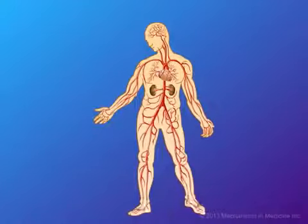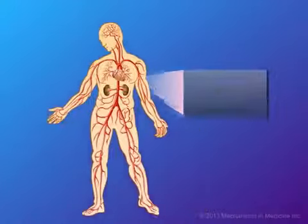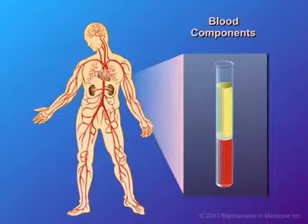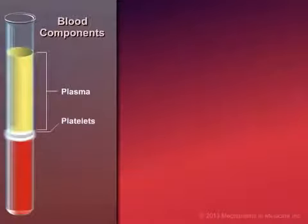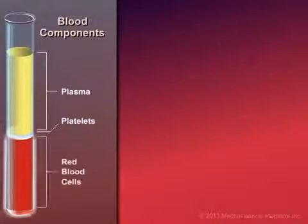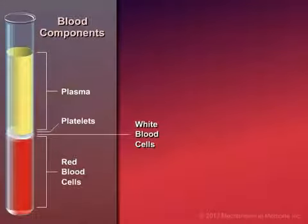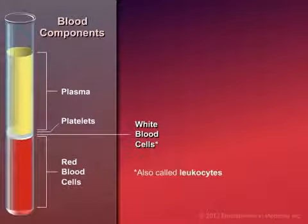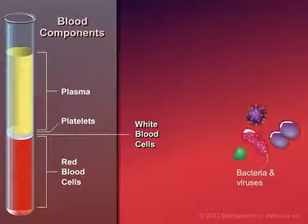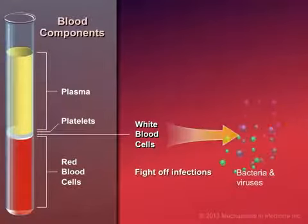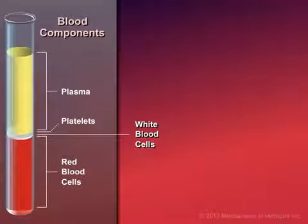Blood plays an important role in the body's immune system defense against germs and microorganisms, and is composed of plasma, platelets, red blood cells, and white blood cells. White blood cells, also called leukocytes, constitute the main part of the immune system, protecting the body against disease-causing organisms and fighting off infection. There are five major types of white blood cells.